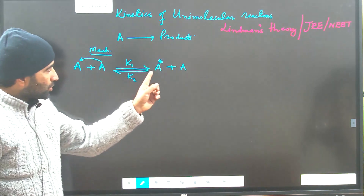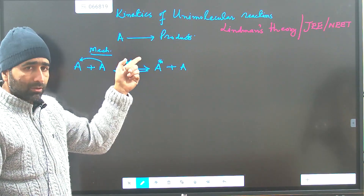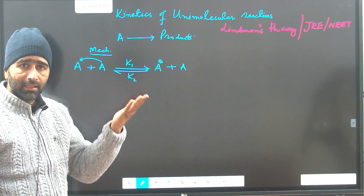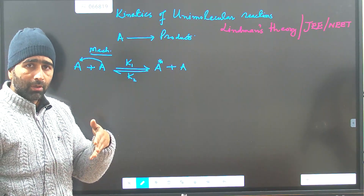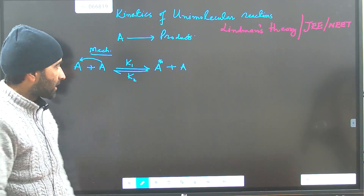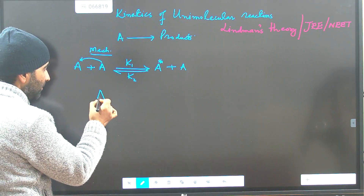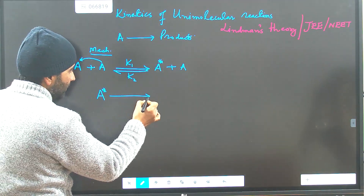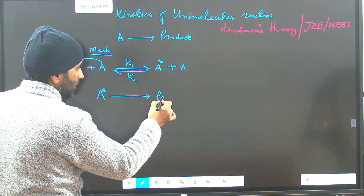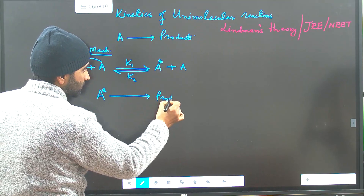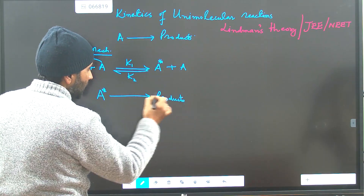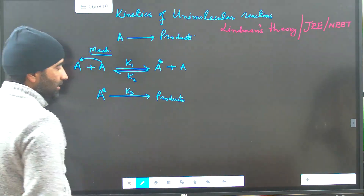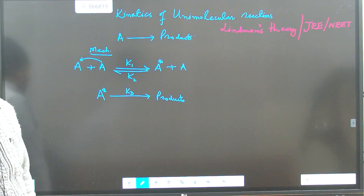Out of these two, one is the excited molecule A*. The molecule which has the higher energy will lead to the formation of the products because it is unstable. This A* having the higher energy leads to the formation of products with another rate constant K3. This is the actual mechanism as per Lindemann's theory.